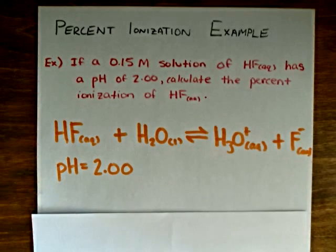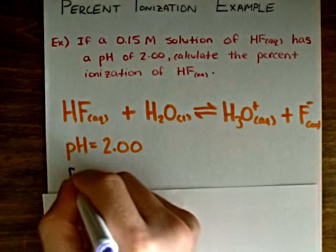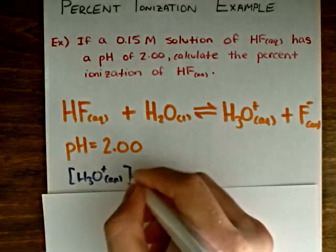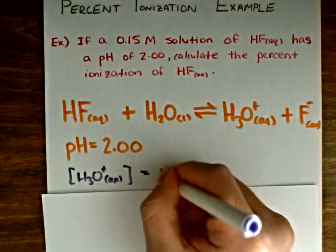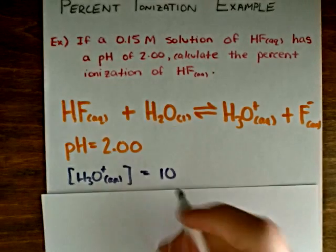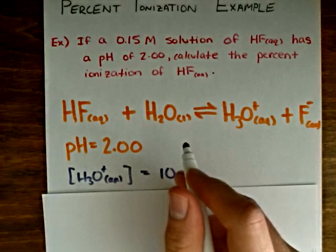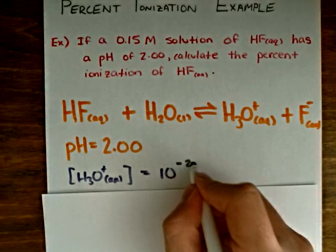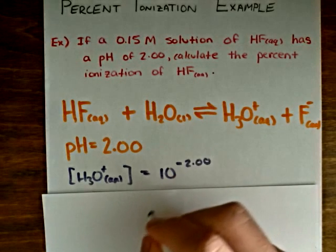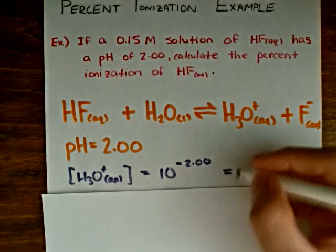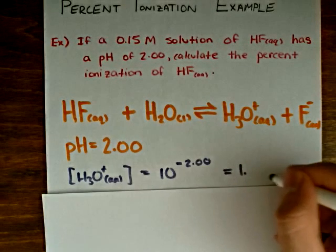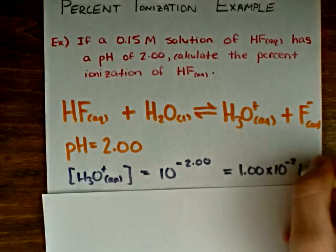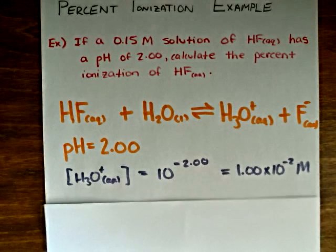So we know that the hydronium ion concentration is just going to be equal to 10 raised to the exponent of a negative pH. So in this case, raised to the exponent negative 2.00, which is equal to 1.00 times 10 to the negative 2 moles per liter. That's our concentration of hydronium ion.